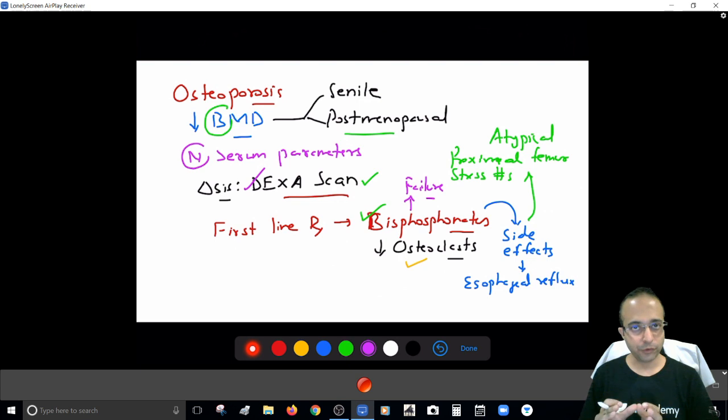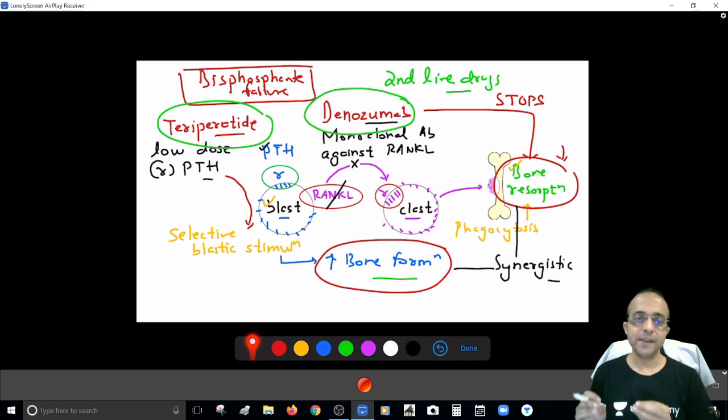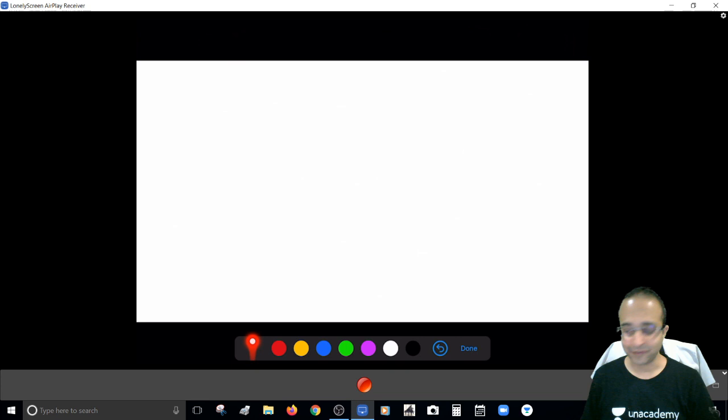But I hope you are clear with what is osteoporosis. You are clear what will be the first-line treatment for osteoporosis. And I hope you are clear that in case there is failure of bisphosphonates in osteoporosis, the alternative wonderful treatment options you have. And that the fact that the options have just spoken of, Teriparatide and Denosumab, the combination also tends to be synergistic.